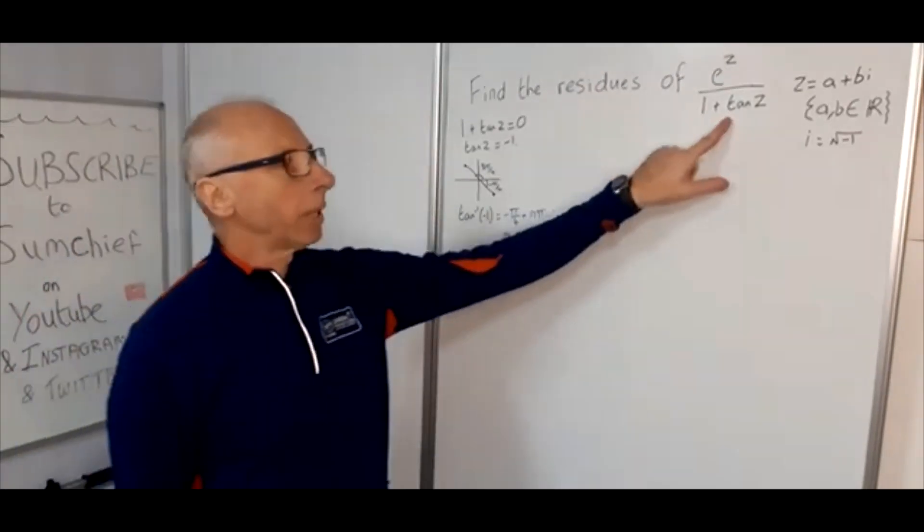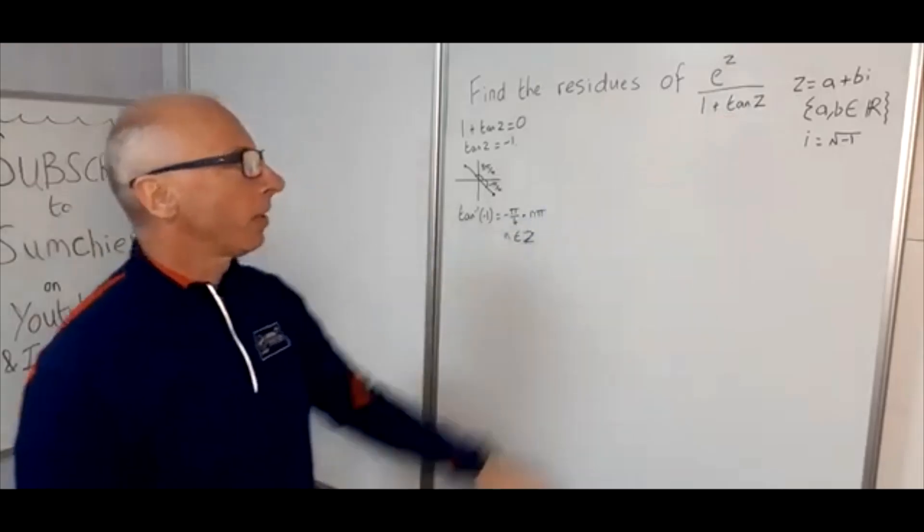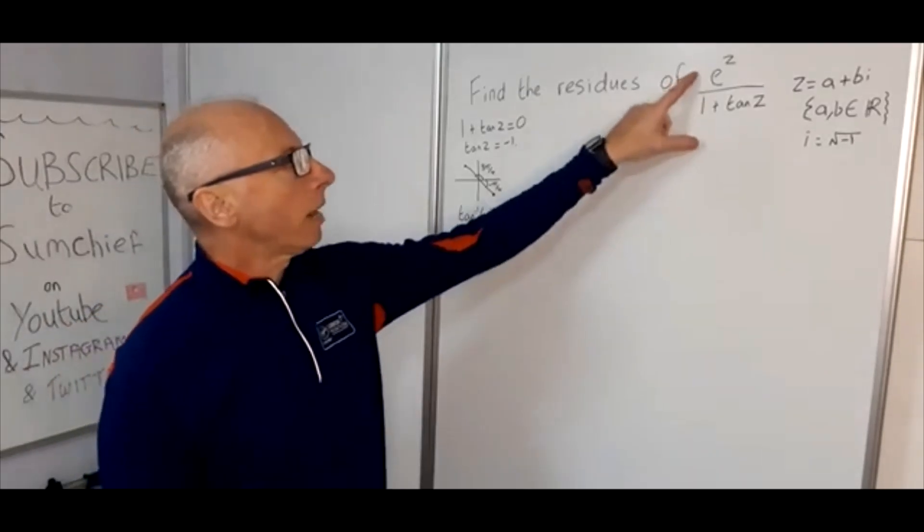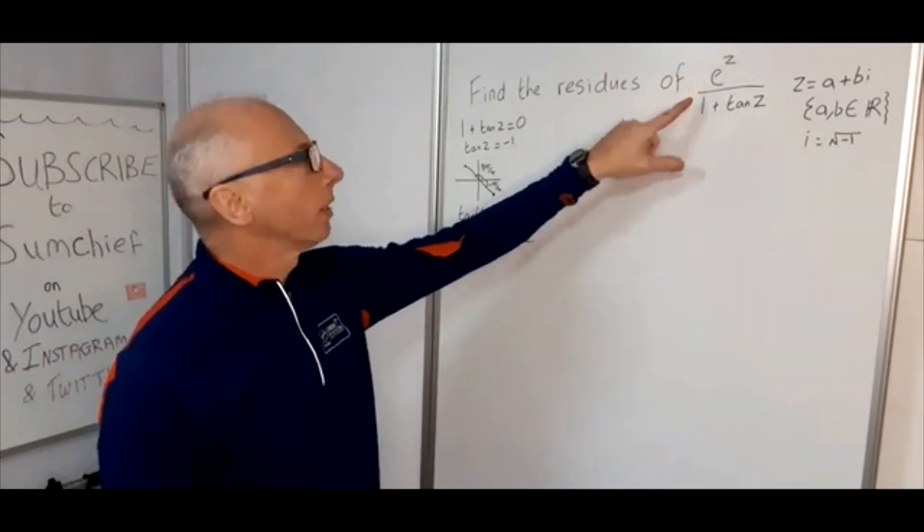Okay, so we've got the denominator equaling zero—that's our first part of the question. So next we need to work out how we're actually going to use that and calculate our residue.